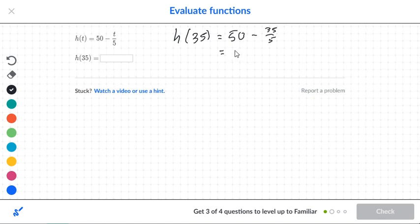So we'll go ahead and do the division here. So 35 divided by 5 is 7. From here we'll get 50 minus 7 is 43. So h of 35 is equal to 43.